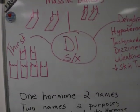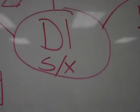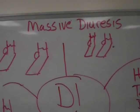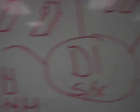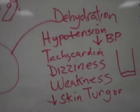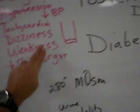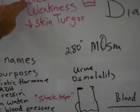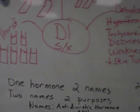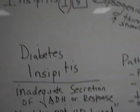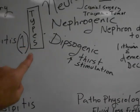The three major signs and symptoms are: thirst, massive diuresis — using the arbitrary number of 4,000 mL — and dehydration. Think about dehydration: the patient will be hypotensive with decreased blood pressure, tachycardic, with dizziness, weakness, and decreased skin turgor. So the three types of diabetes insipidus are neurogenic, nephrogenic, and dipsogenic.